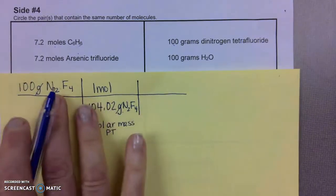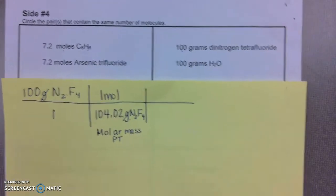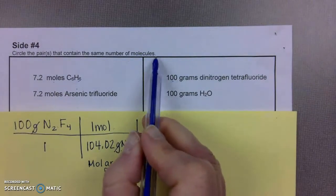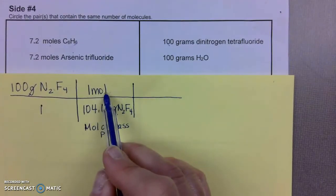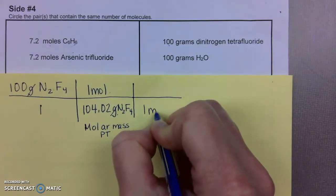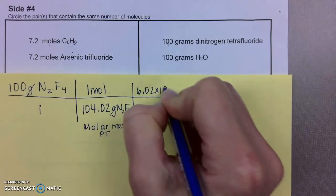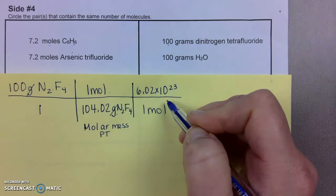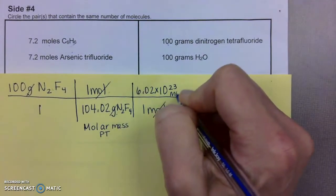Dimensional analysis, the big setup is to be able to cancel out your units. So now I'm at a mole. However, I'm asking you to calculate molecules. To become a molecule now, I have mole on top. That means I have one mole is equal to 6.02 times 10 to the 23rd molecule of dinitrogen tetrafluoride. I can cancel out moles, and I'm left with molecule.